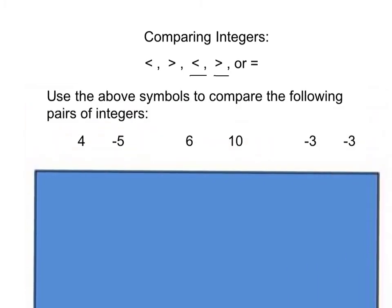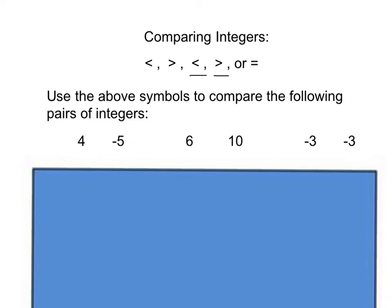Now I would like you to take a moment and try comparing some integers yourself using the symbols above. Pause the video, write the examples in your notes, and put in the symbol you believe is appropriate. The first pair is 4 and negative 5 — any positive integer will always be greater than a negative integer, therefore 4 is greater than negative 5. Next, 6 is less than 10. Finally, negative 3 and negative 3 — when two numbers are the same, they are equal to each other.